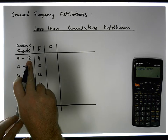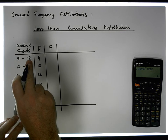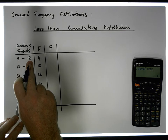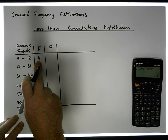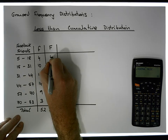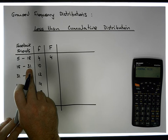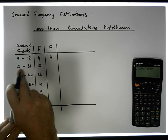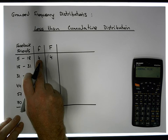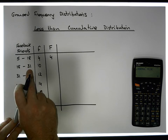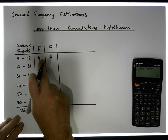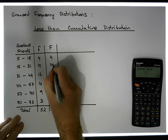Starting with the first class, its upper bound is 18. How many observations are less than 18? There are four. So four goes in here. With respect to the next class, its upper bound is 31. How many observations are less than 31? There are the 10 in this class and the 4 from before, so 10 plus 4 gives us 14 observations.